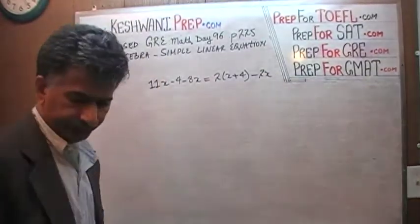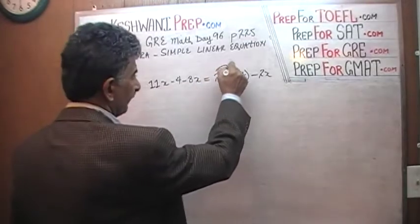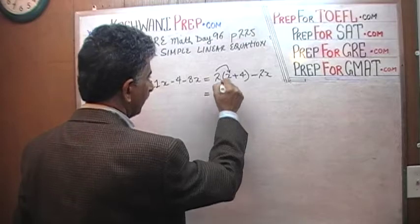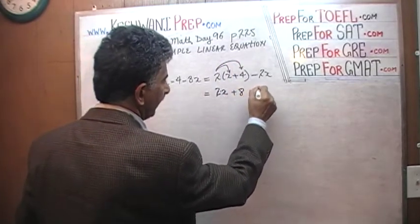Let's see what we can do. Well, the very first thing we have to do is take care of the parenthesis. The very first thing we have to do is take care of the parenthesis on this side. So 2 times x is 2x and then 2 times 4 is 8. And then we have minus 2x here.